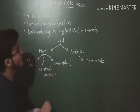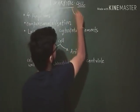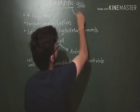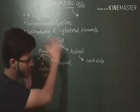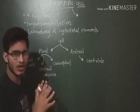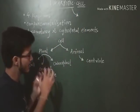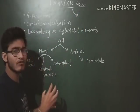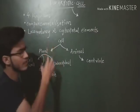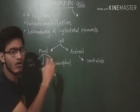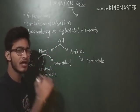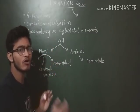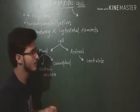Here we will start the eukaryotic cell general study — what are the general features of a eukaryotic cell? After that, we are going to take one organelle in each lecture and talk about it in detail.